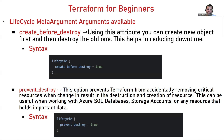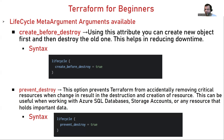The second attribute is prevent_destroy. As the name suggests, this option prevents Terraform from accidentally removing critical resources when a change would result in the destruction or recreation of a resource. This is useful when dealing with an S3 bucket that has files defined in it — if you want to change configuration or apply ACL permissions, prevent_destroy protects the critical data before those changes execute. It is also useful with Azure SQL databases, storage accounts, or any resource holding important information.